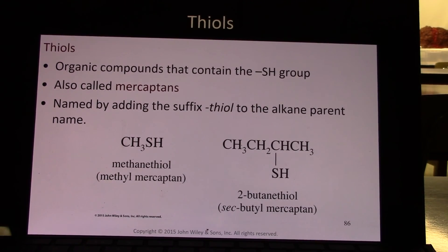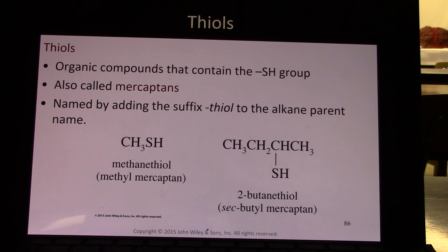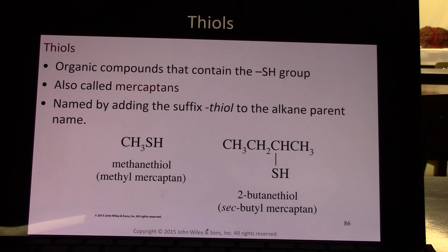Thiols. This is an organic compound that has an SH group. 'Thio' is always used in chemistry when there is a sulfur in the place where you would have expected to find an oxygen. So a thioether has a sulfur instead of an oxygen. They are also called mercaptans, and they are named by adding the suffix -thiol to the parent alkane.